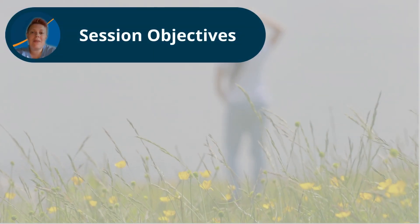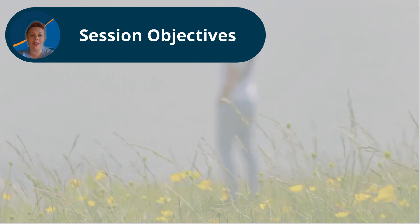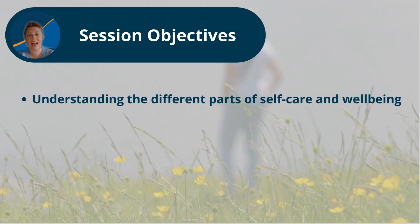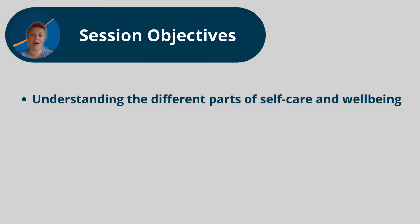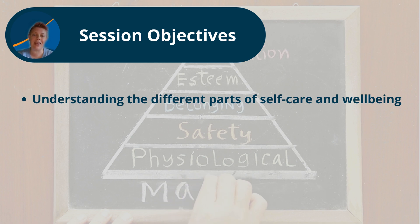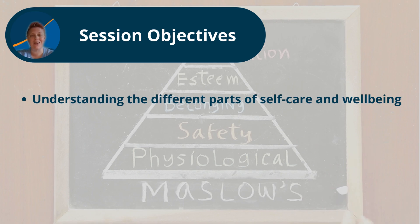The first of three objectives for this session is to understand the different parts of self-care and wellbeing. We're going to look at Maslow's hierarchy of needs and the different parts of the human experience that will help us become the best that we can be, starting with some really basic things that need to be put into place before building up to higher level wellbeing.